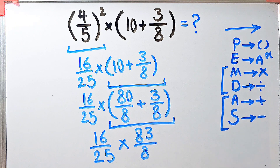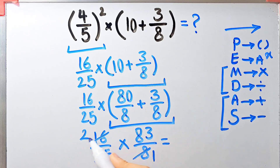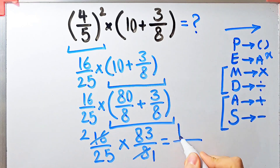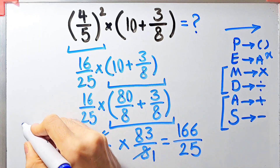16 divided by 8 equals 2, and 8 divided by 8 equals 1. Now we have 2 over 25 times 83 over 1. 2 over 25 times 83 over 1 equals 166 over 25. Thanks for watching, please subscribe to the channel and leave a comment. Goodbye!